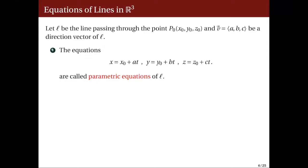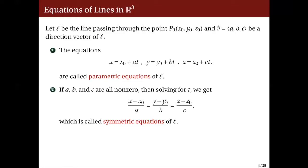If in each parametric equation we solve for t in terms of x, y, and z, on the first equation we get t equal to (x minus x0) over a, provided a is non-zero; on the second, (y minus y0) over b, provided b is non-zero; and on the third, (z minus z0) over c, provided c is non-zero. Since t equals itself, those three expressions must be equal — giving us the symmetric equations of the line L.